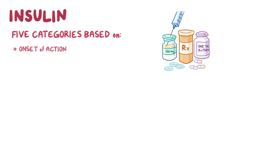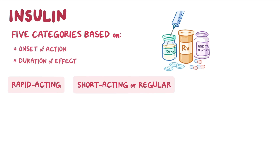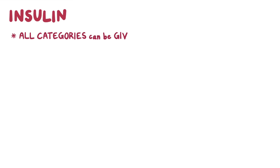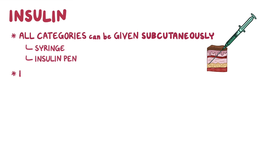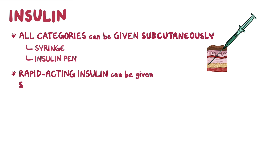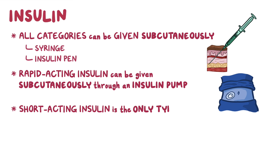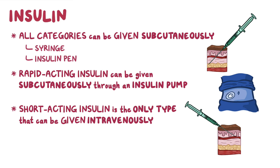There are five main categories of insulin based on their onset of action and duration of effect: rapid acting, short acting or regular, intermediate acting, long acting, and ultra-long acting insulins. All categories can be given subcutaneously through syringes or insulin pens. Rapid-acting insulin can also be given subcutaneously through an insulin pump, while short-acting insulin is the only type that can also be given intravenously.